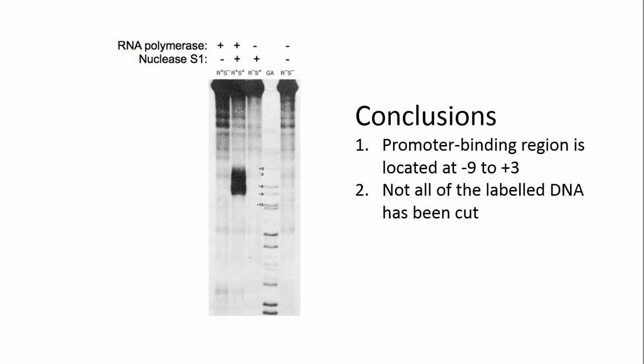This study allows us to conclude the location of the T7 phage promoter and that it is about 12 base pairs in length. We can also say that not all of the end-labeled DNA has been cut. This is what we are seeing at the top of the gel. If all of the DNA was cut by S1 nuclease, we would only see small bands on the gel.